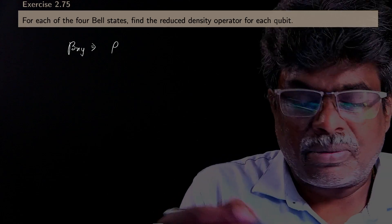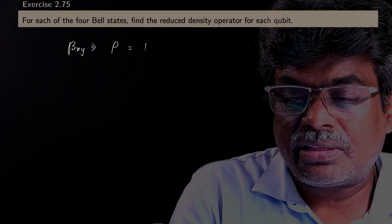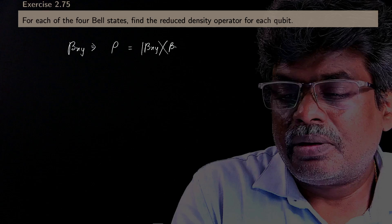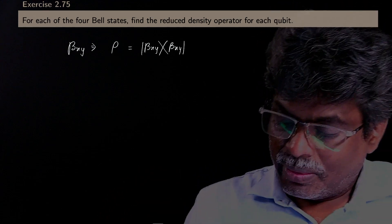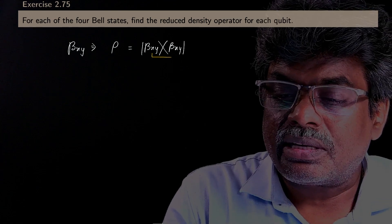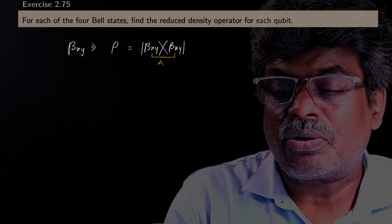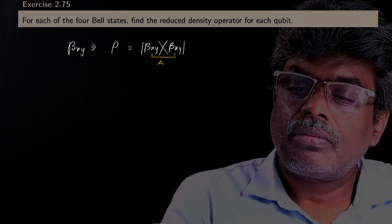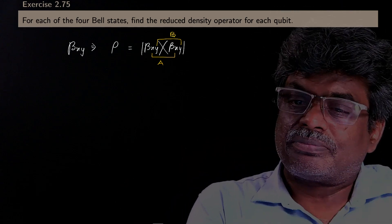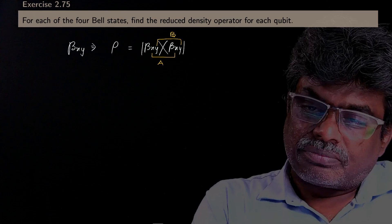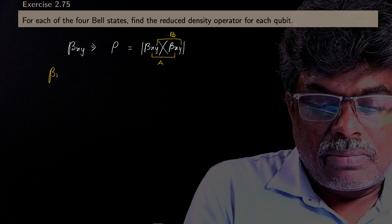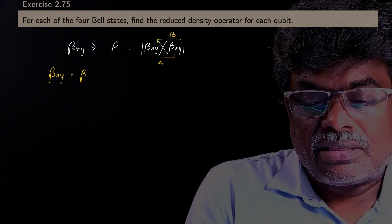For this, if I take the density operator, which is nothing but |β_xy⟩⟨β_xy|. Let us suppose these are two qubits — x corresponding to system A and y corresponding to system B. I will take one small example: for β_xy, I am taking it as β₀₀.